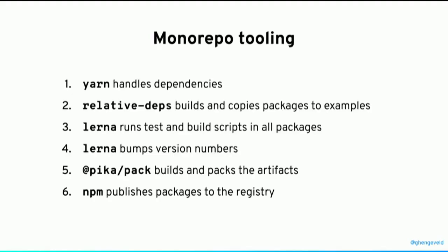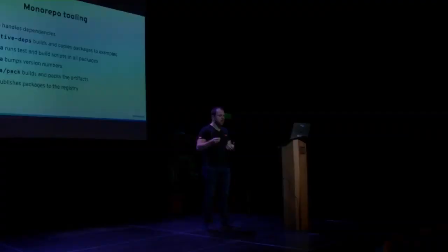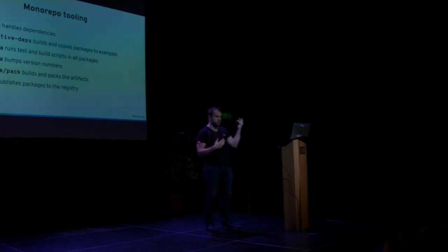RelativeDepts copies the built output into the NodeModules directory of each of the examples, so it's basically as if it was installed from NPM, but it's actually a file watcher doing that continuously. Then Lerna runs all the tests and build scripts in all the packages, bumps the version numbers so they are all equal. When React Async is version 9.0.0, all the examples are also version 9.0.0. And then Pika Pack handles the actual building and packaging of the artifact that's going to be published on NPM, automatically shipping TypeScript definitions and modern ES2019 code beside ES5.